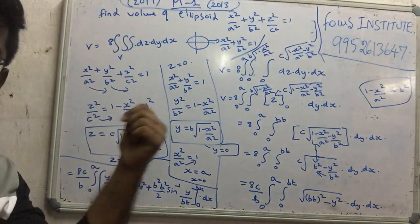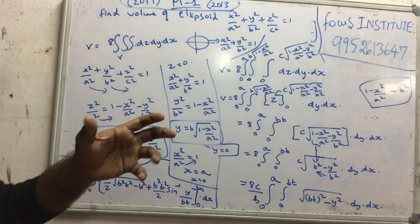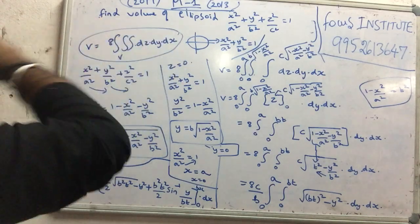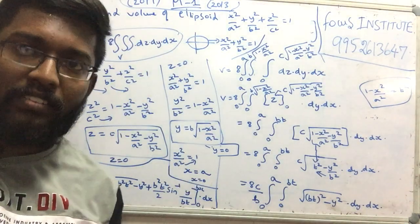x² by a², y² by b² plus z² equals c². I will tell you how easy to solve it.